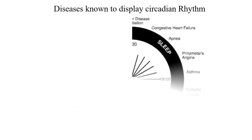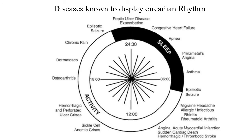There is a connection between time and disease. Peptic ulcer disease pain is high at night because high acid secretion occurs at midnight. Congestive heart failure can occur in early morning around 3 to 4 AM due to sympathetic and parasympathetic tone. Asthma is worst in the early morning around 4 to 5 AM. Seizures and migraine headaches peak around 6 to 7 AM. Sickle cell anemia crisis is seen around 1 AM.